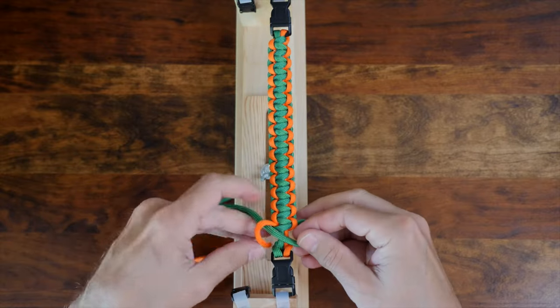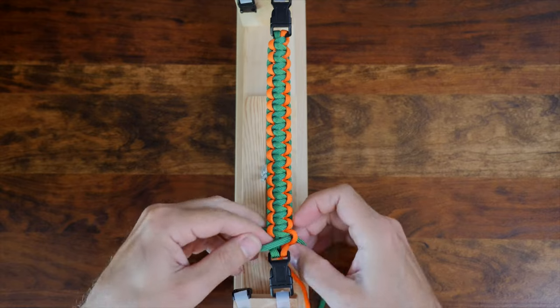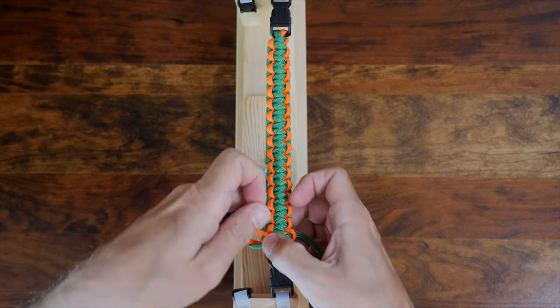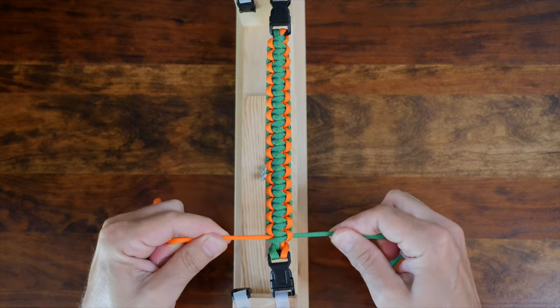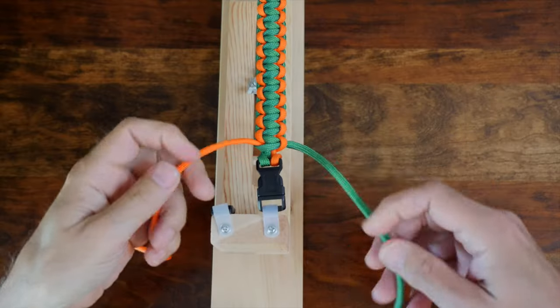When you get near the end, you'll want to trim your paracord and melt the ends. It's okay to trim the end on top of the bracelet, and you'll end up with a melted end that's similar to this example, but there's a tidier way.